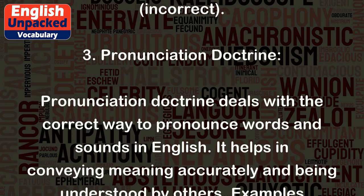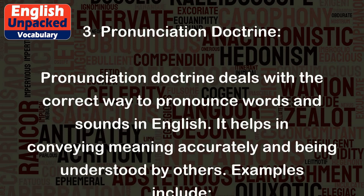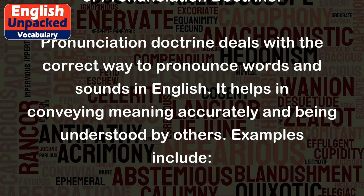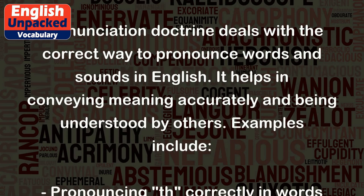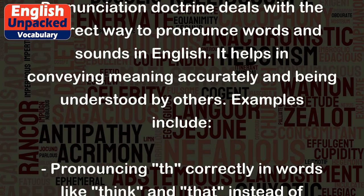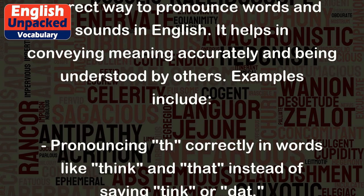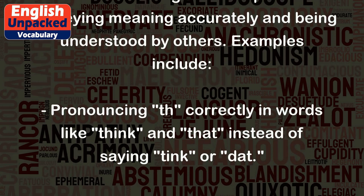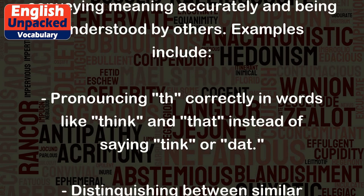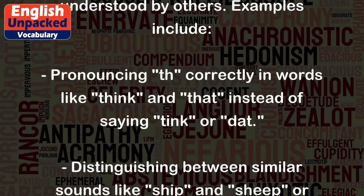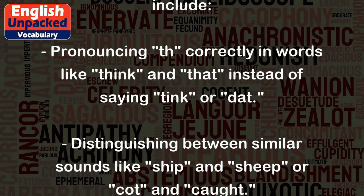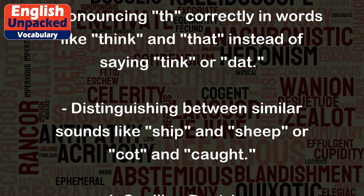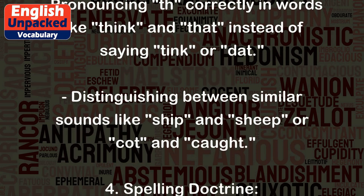Pronunciation Doctrine. Pronunciation doctrine deals with the correct way to pronounce words and sounds in English. It helps in conveying meaning accurately and being understood by others. Examples include pronouncing 'th' correctly in words like 'think' and 'that,' instead of saying 'tink' or 'dat.'